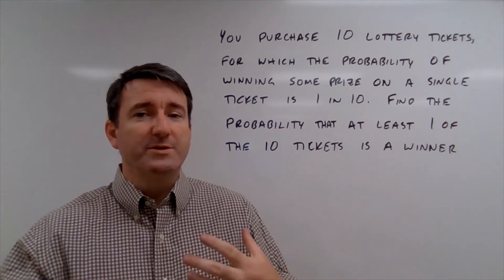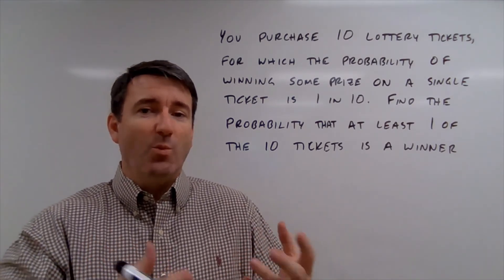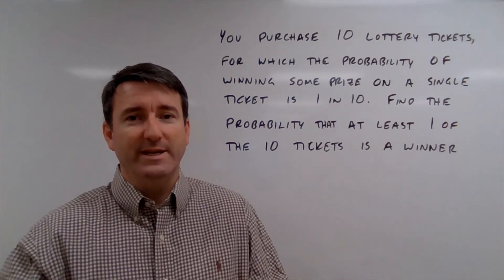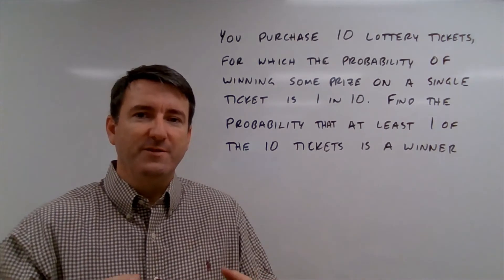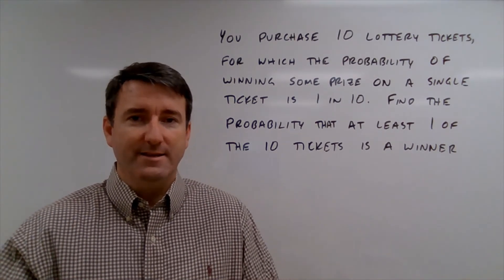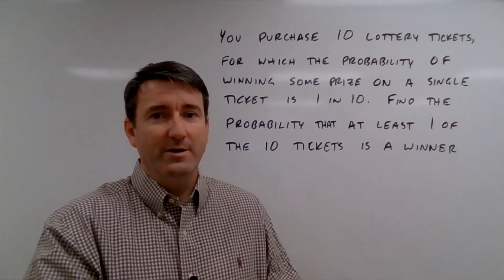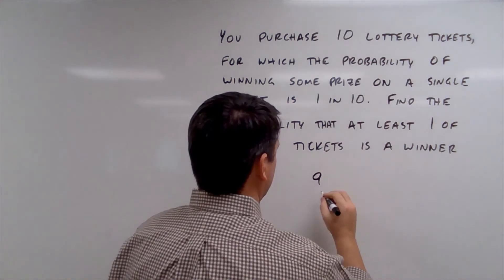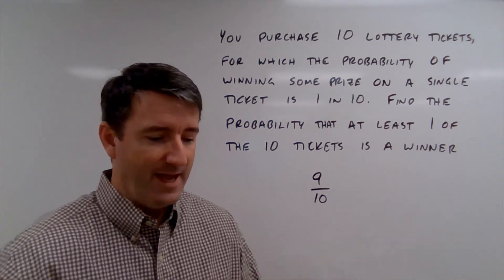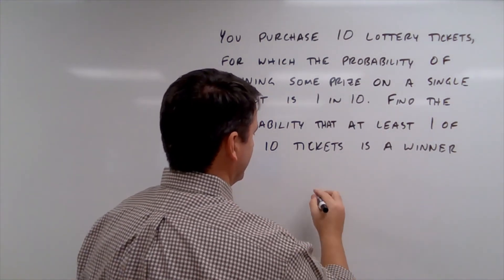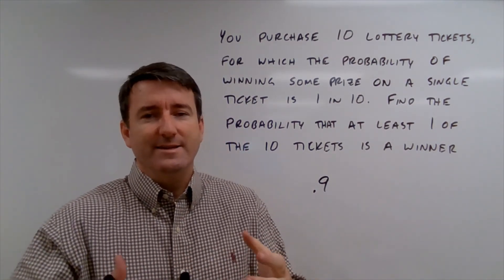For our last example, we're told that you purchase 10 lottery tickets for which the probability of winning a prize on a single ticket is 1 in 10. We're asked to find the probability that at least one of the 10 tickets is a winner. The first thing we need to do is figure out the probability that a ticket is not a winner. The probability of winning is 1 out of 10, so the probability of not winning is 9 out of 10, or 0.9. That's the probability that each individual ticket is not a winner.